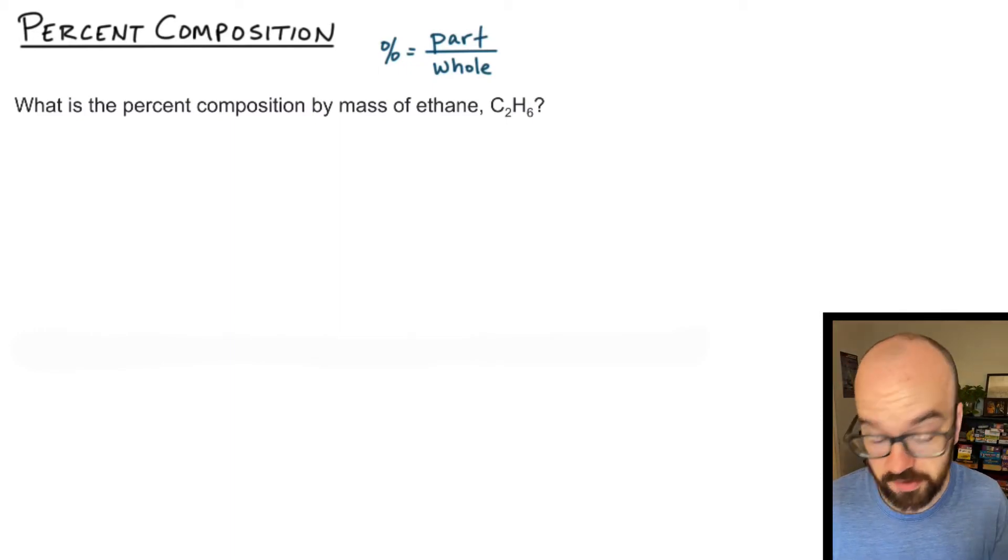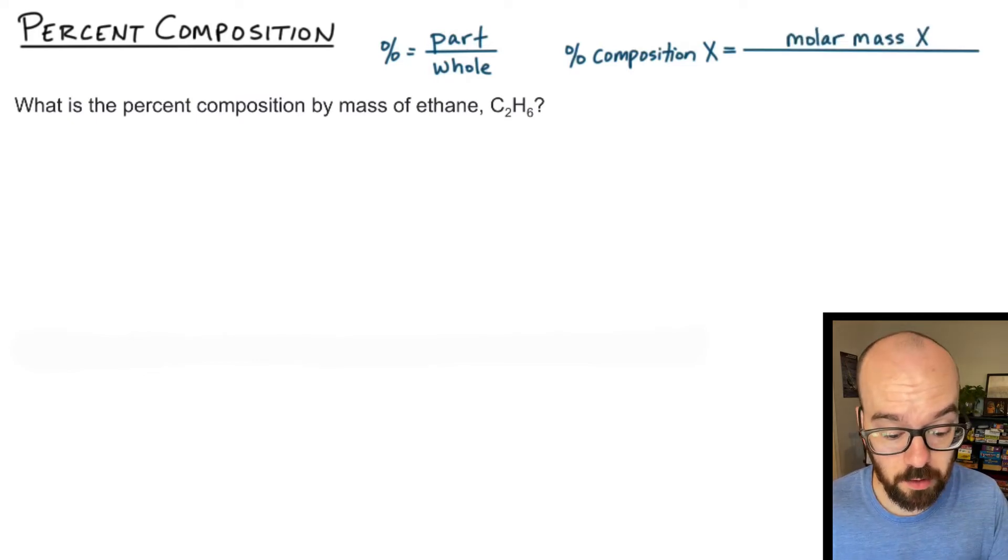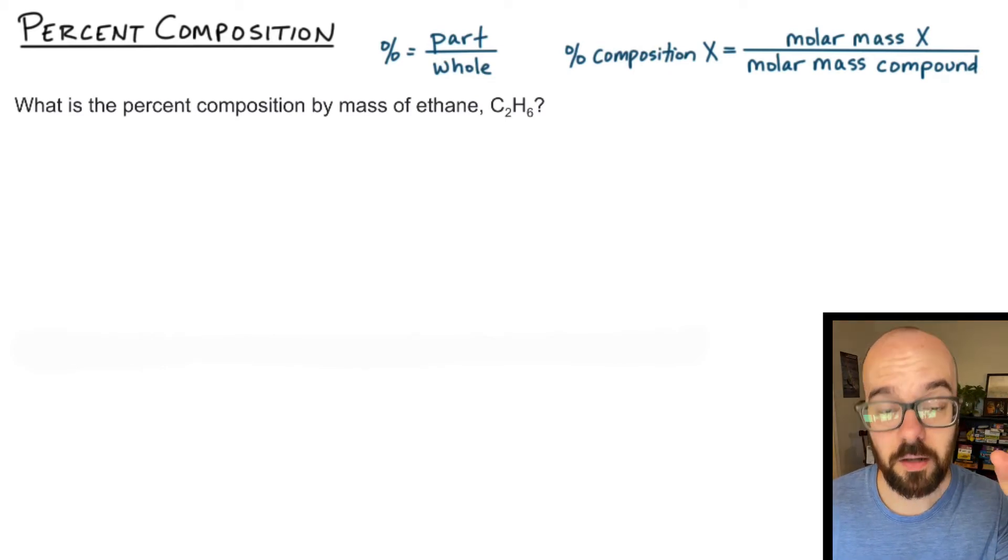In this case for percent composition in chemistry, if we want to know the percent composition of some element like carbon or hydrogen or nitrogen, that's going to be equal to the molar mass of that element divided by the molar mass of the whole compound. Let's jump to a problem and see what that looks like.